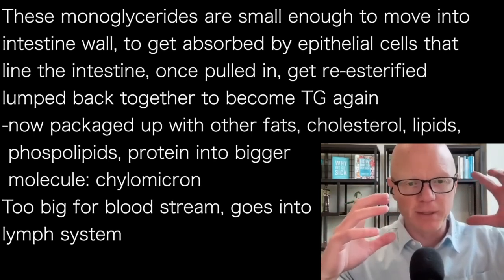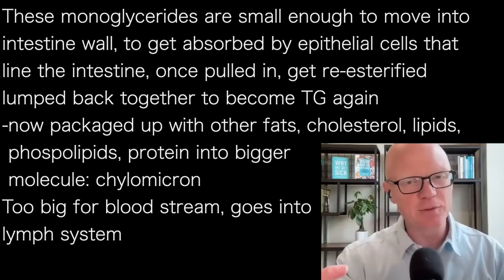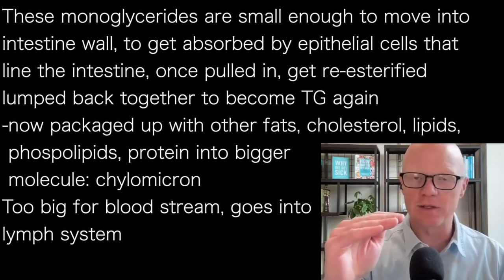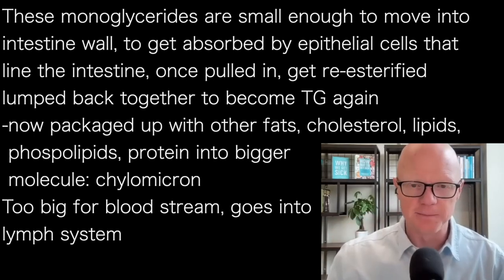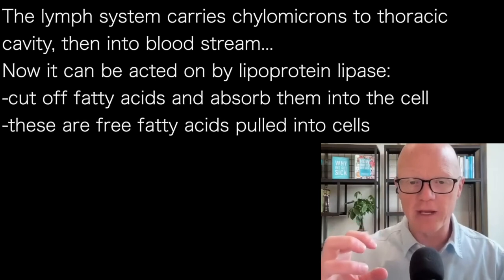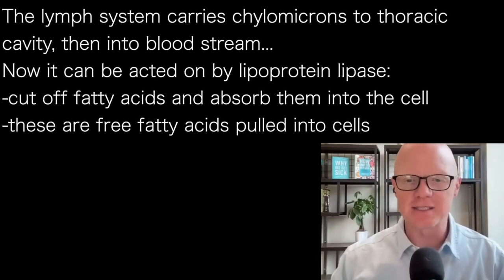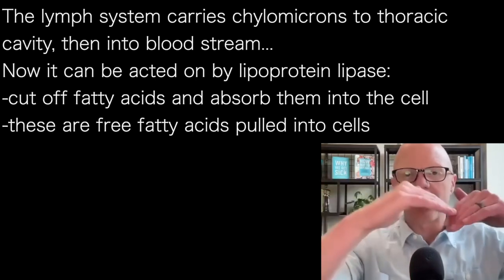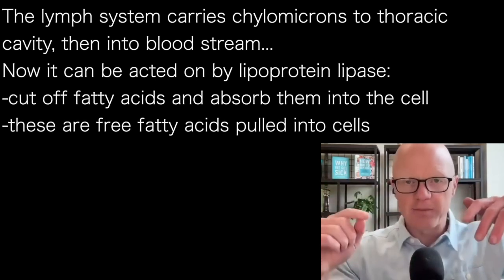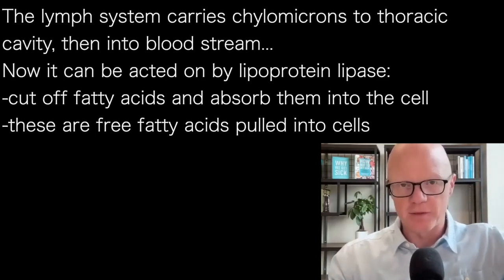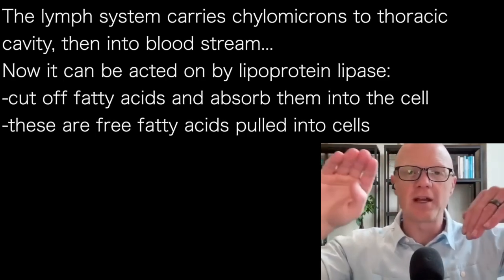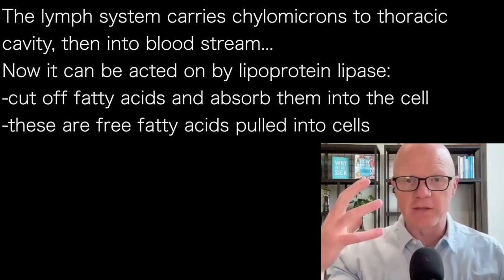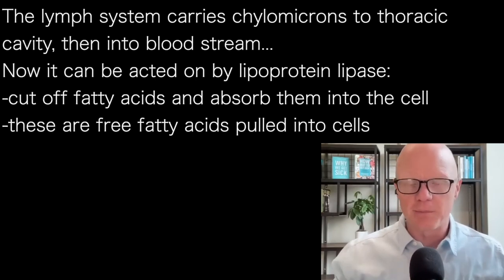The chylomicron is big — big enough that it's not easily moving into a capillary and into the bloodstream. So it doesn't go into the bloodstream; it goes into the lymph system. The lymph system carries these chylomicrons and deposits them into the blood through the thoracic cavity, where lymph meets back up with blood. Lymph comes from blood — that's a topic for another time — but flowing slowly through the body, ultimately making its way back to the blood. So the chylomicrons, these big fatty protein complexes, come back into the blood.